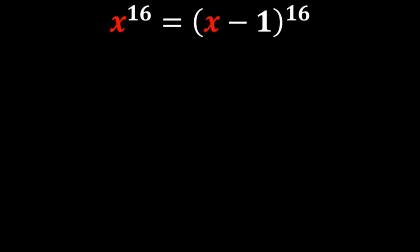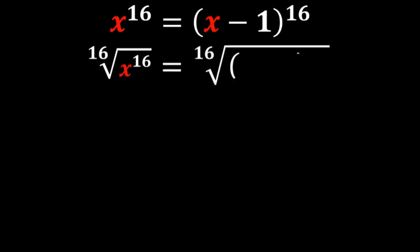So the first thing we're going to do is we're going to take the 16th root of both sides of this problem. So we have the 16th root of x^16 is equal to the 16th root of (x minus 1) to the power of 16.